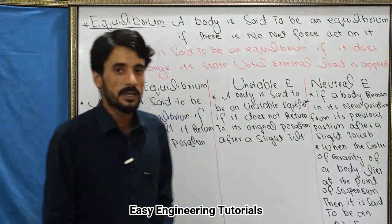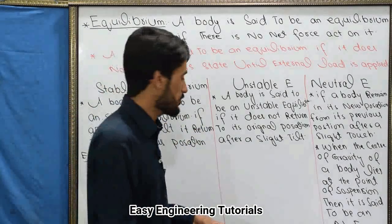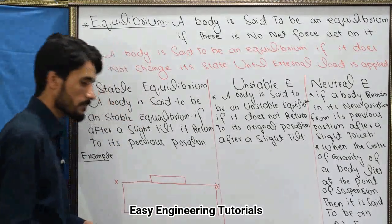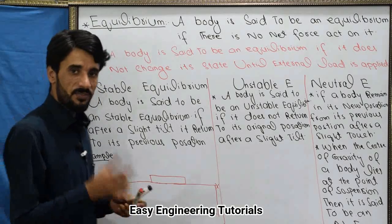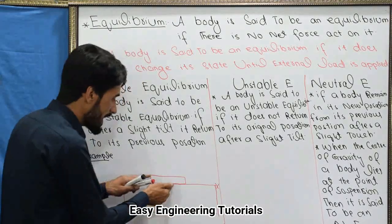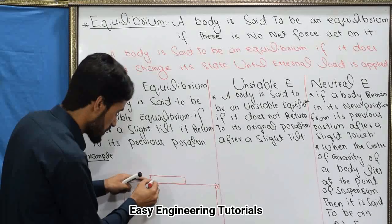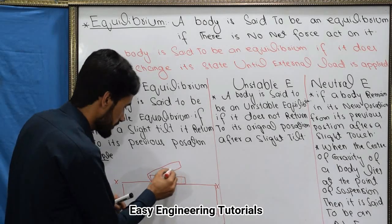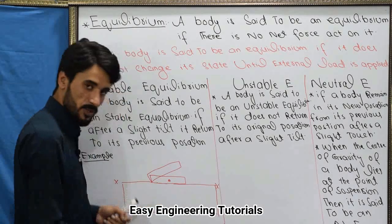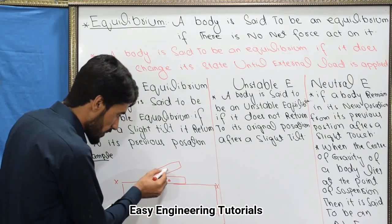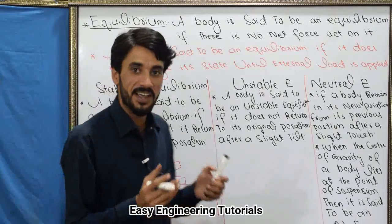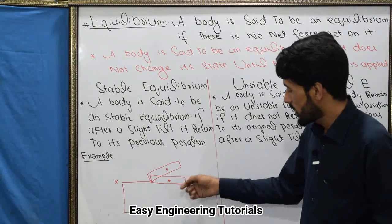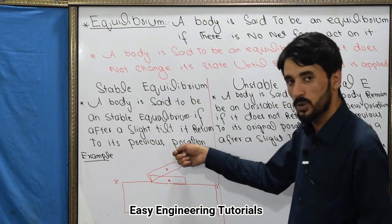An example of stable equilibrium: suppose a book is lying on a table. If I slightly lift the book to one side, the center of gravity of the book is raised. When I release it, the book will return to its previous position on the table.